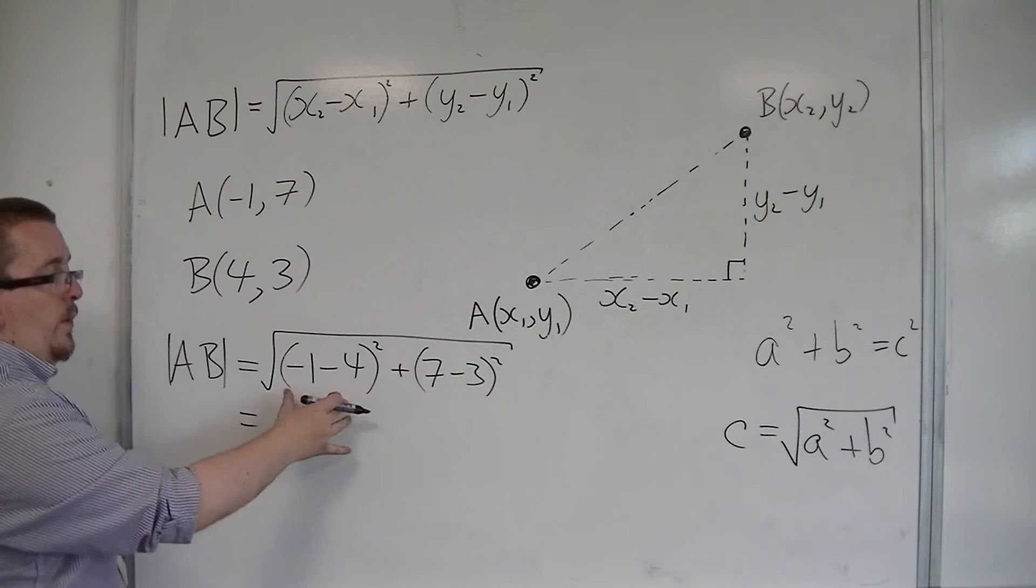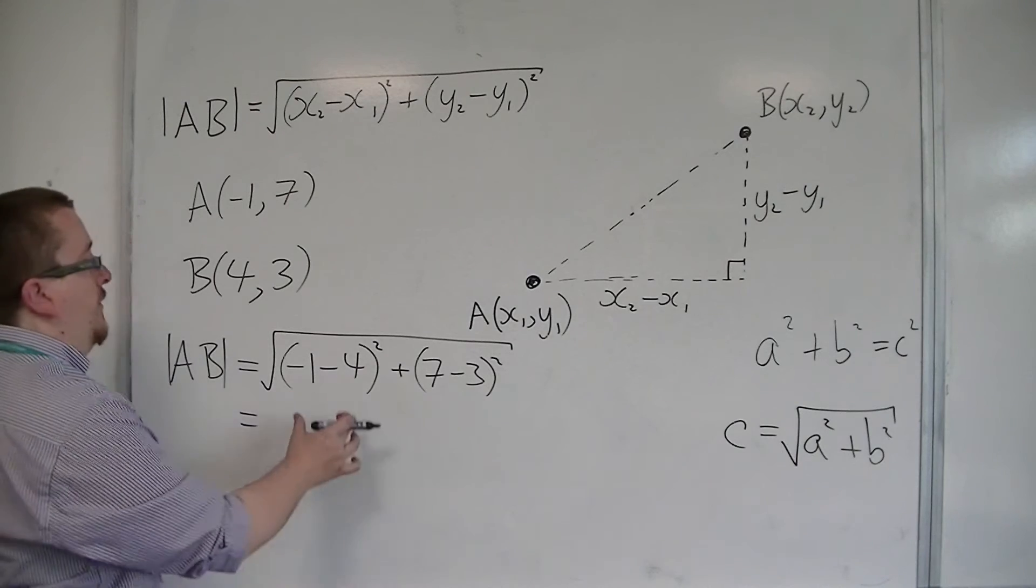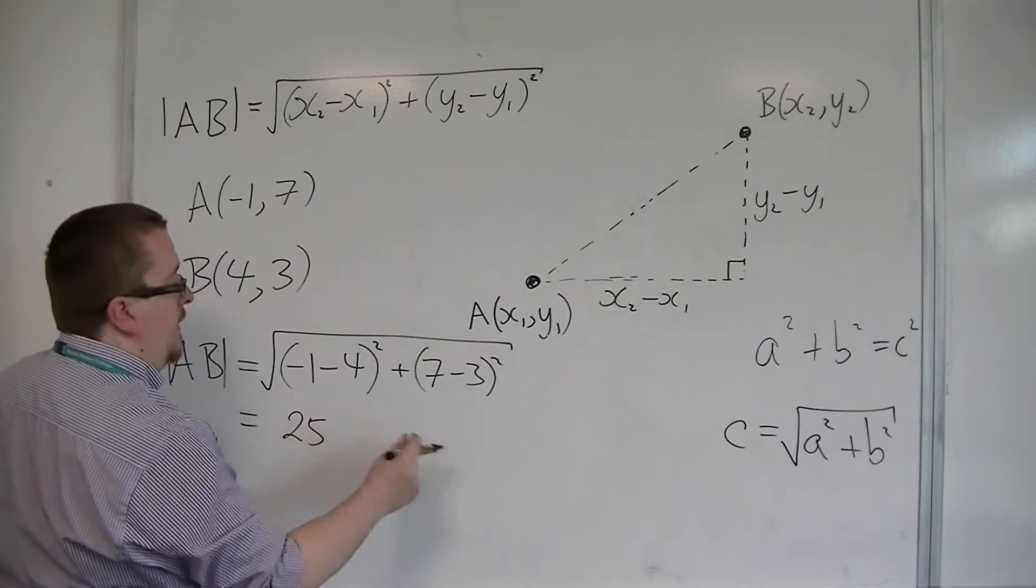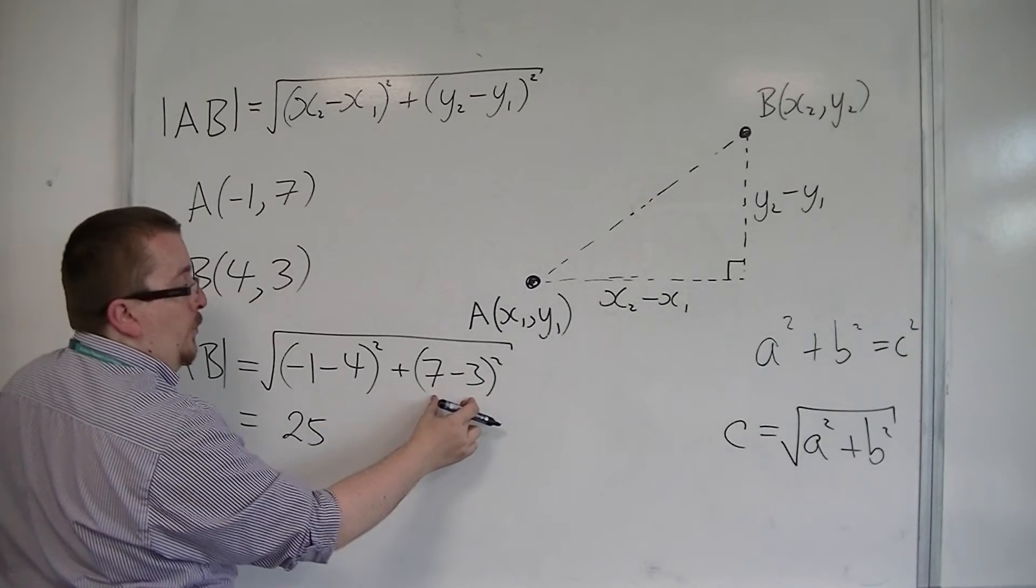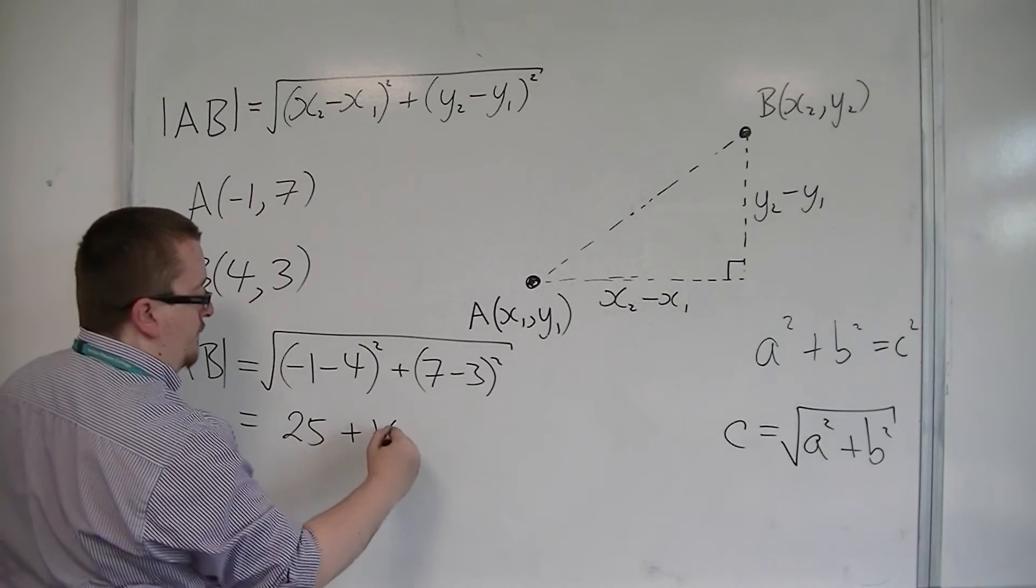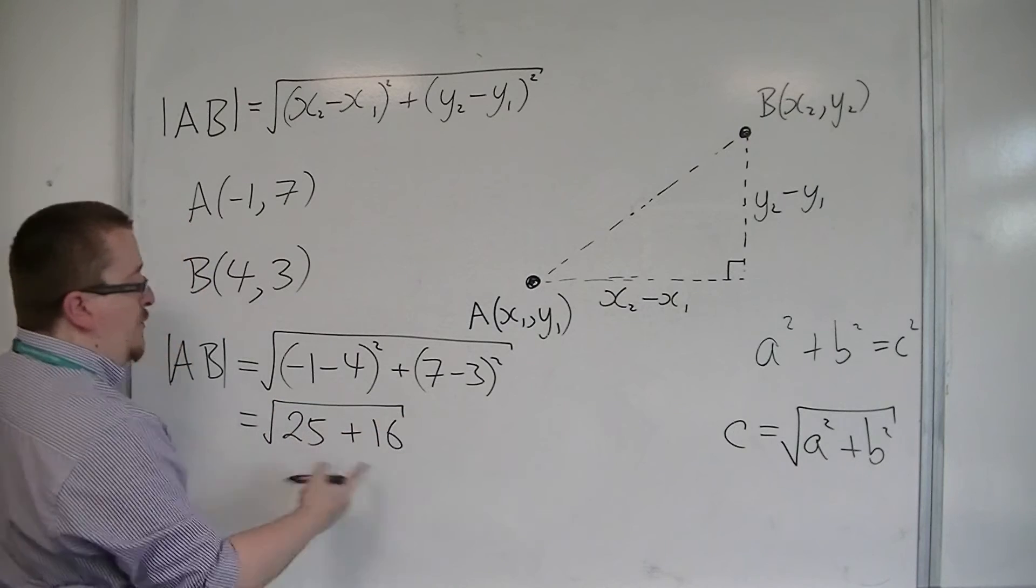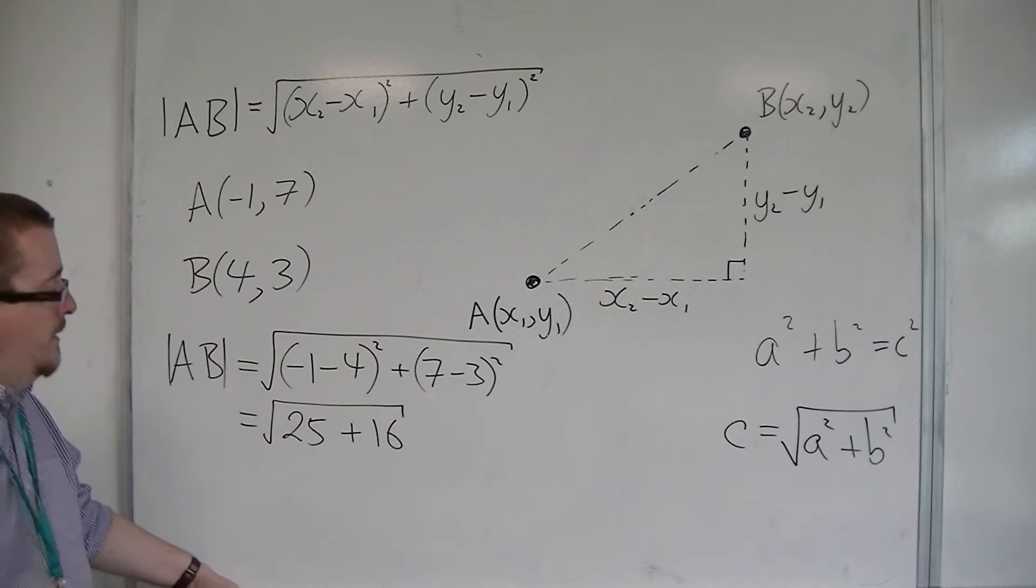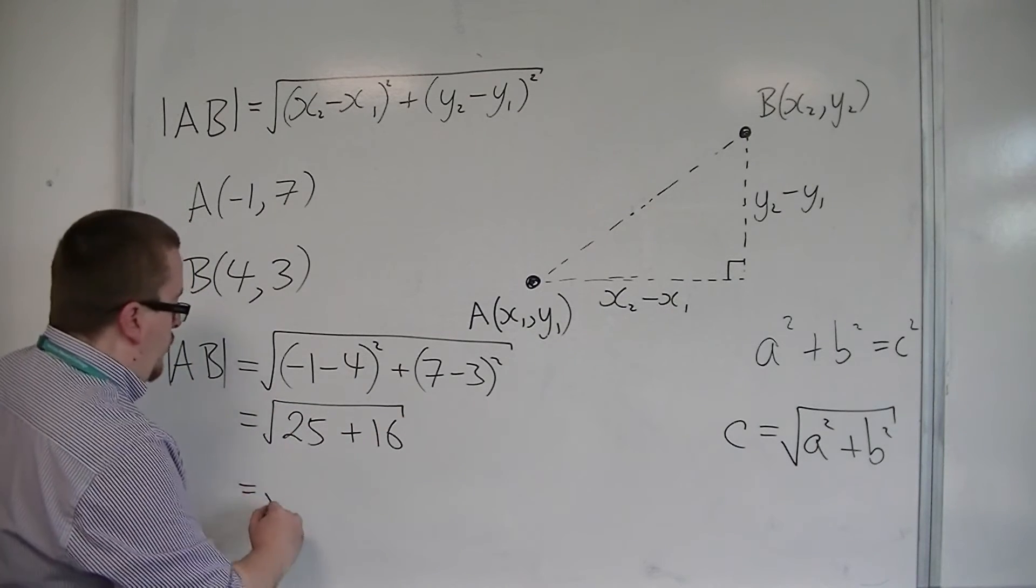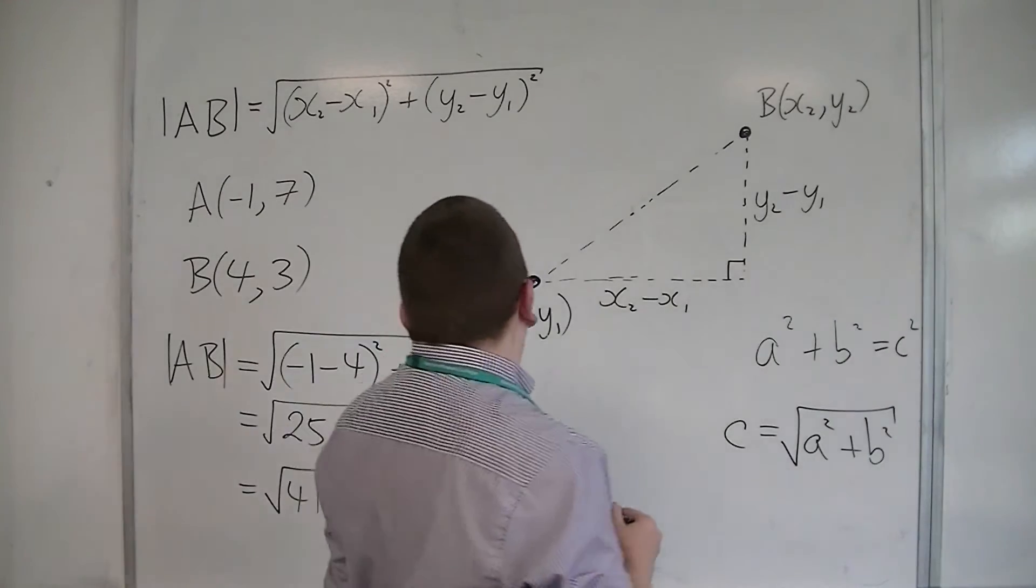So we have minus 1, take away 4, is minus 5, so minus 5 squared is 25. 7 take away 3 is 4, 4 squared is 16. So 25 plus 16 is 41, so this is the square root of 41.